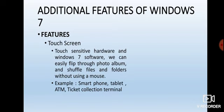You all know about touch screen and use it in daily life — like your smartphone, which has a sensitive touch screen through which you can operate your mobile phone. In touch screen, touch-sensitive hardware is combined with Windows 7 software. The hardware part is touch sensitive and the software part is the operating system. We can easily flip through a photo album and shuffle files and folders without using a mouse.